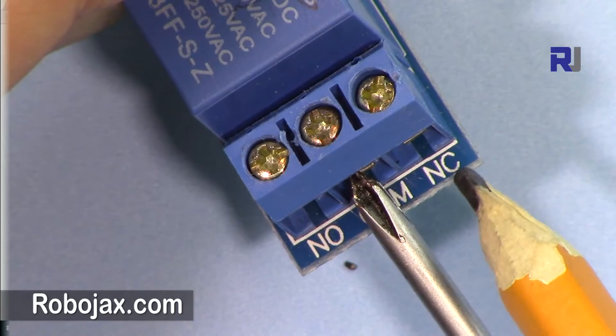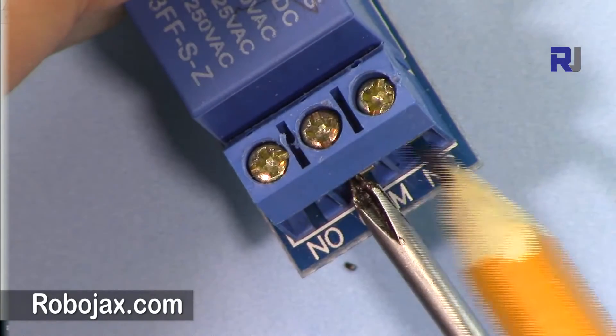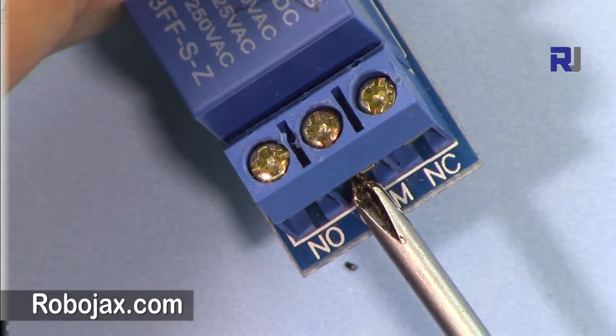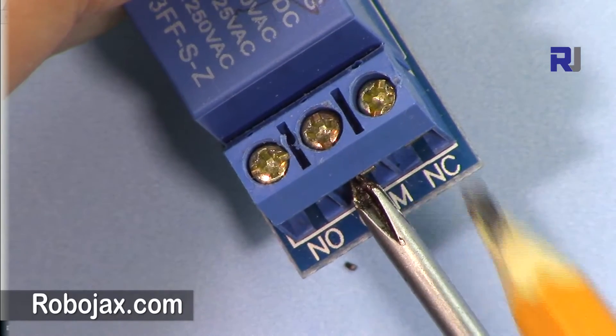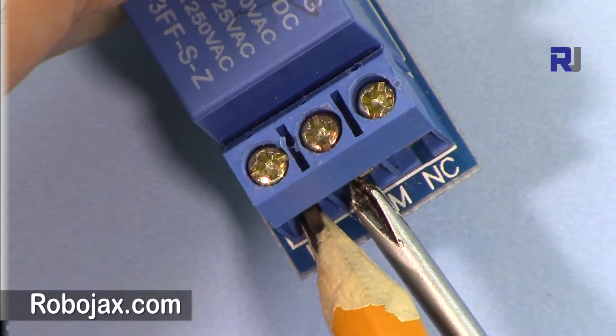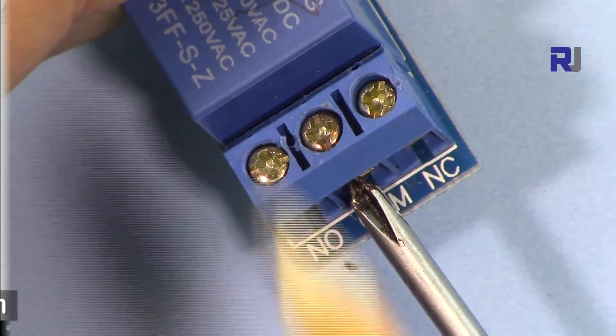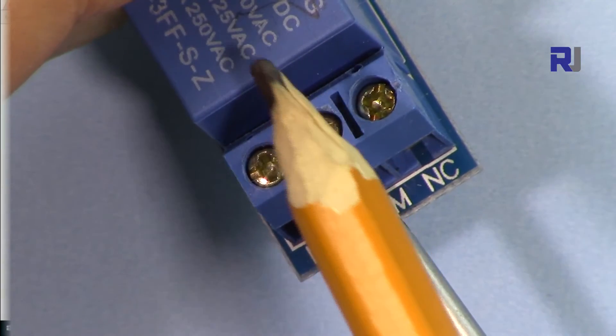This means normally connected, so without any power to this it's always connected. If you connect the other wire here it will be connected and your device will have power. And this is normally open. When you connect the middle here and the other one here it will be normally open. When the relay energizes or gets signal, this will connect these two wires.